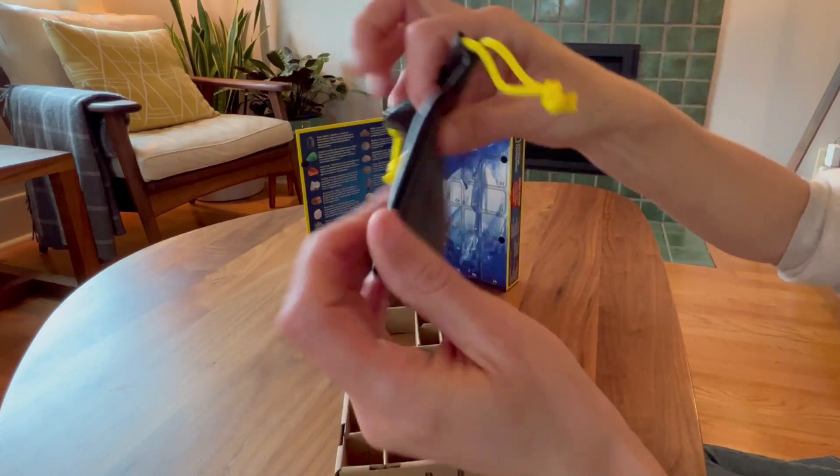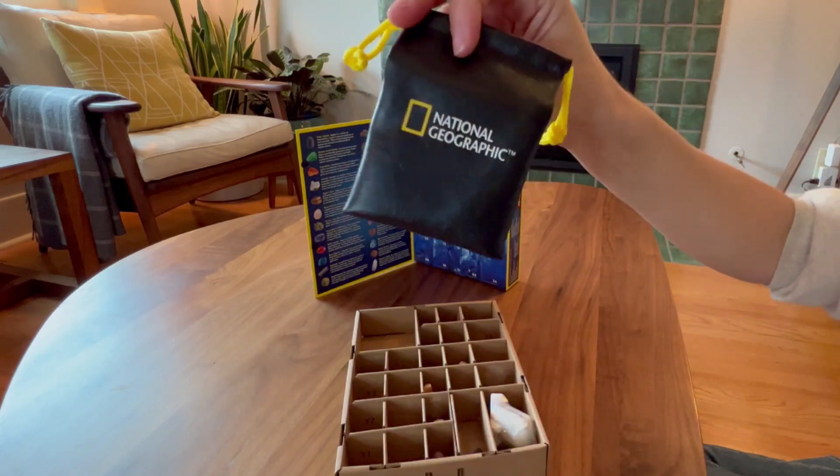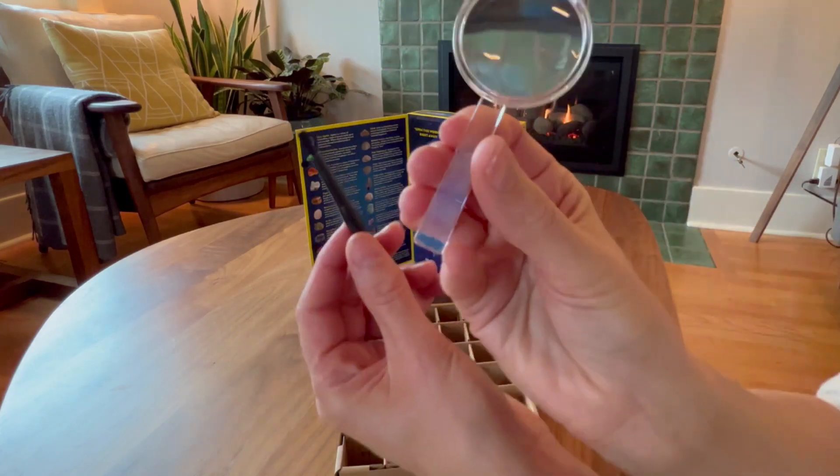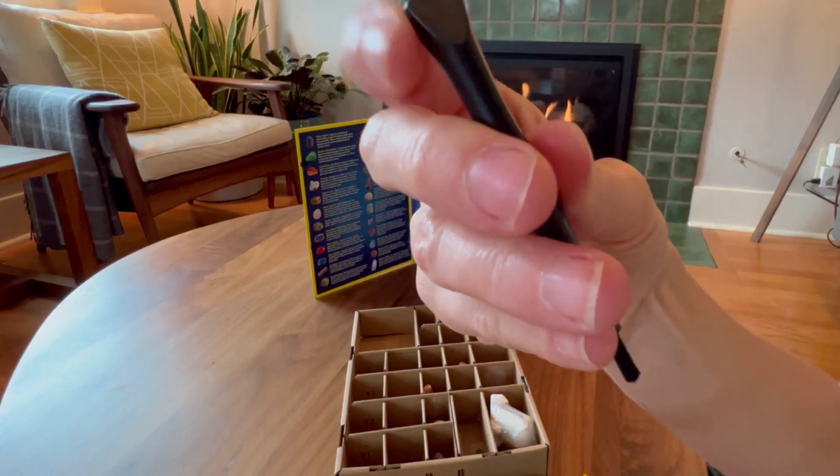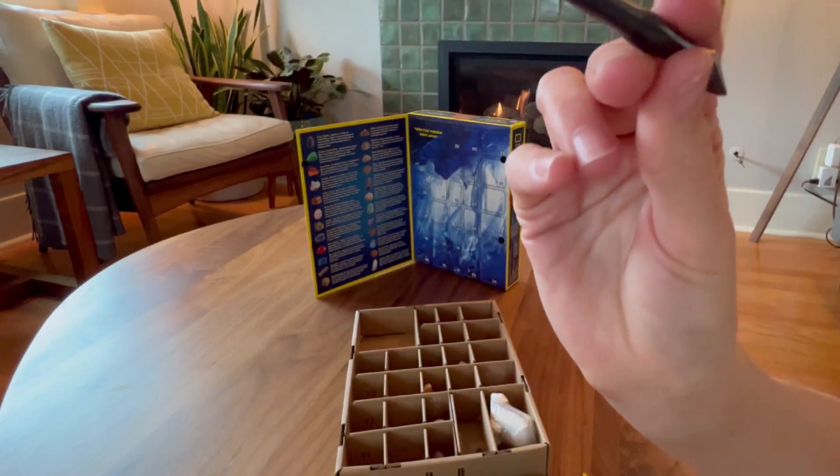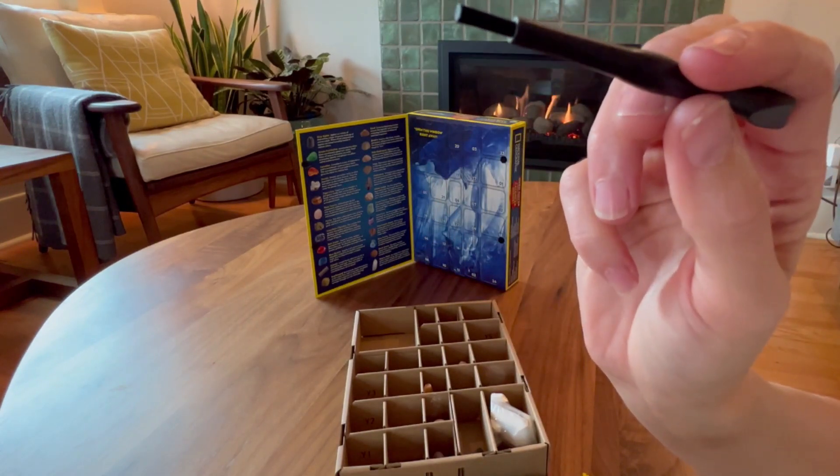It has National Geographic on it and is a soft faux leather. With that, you get a magnifying glass and this great little tool here. It has a little grinder on this side for digging into pieces and a little brush on the side over here.